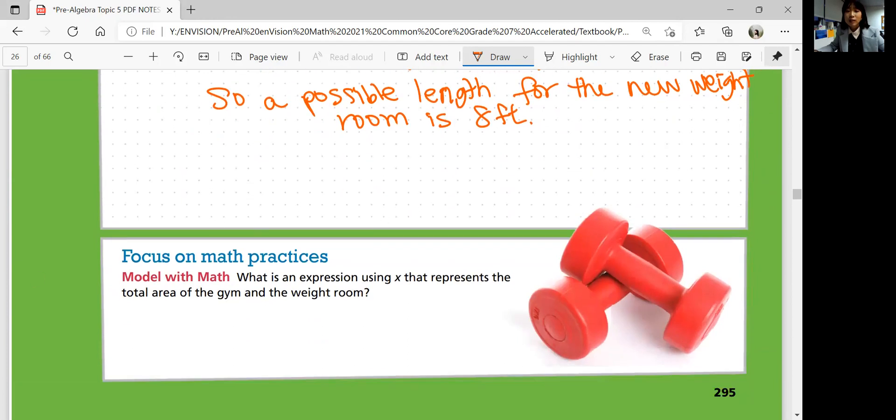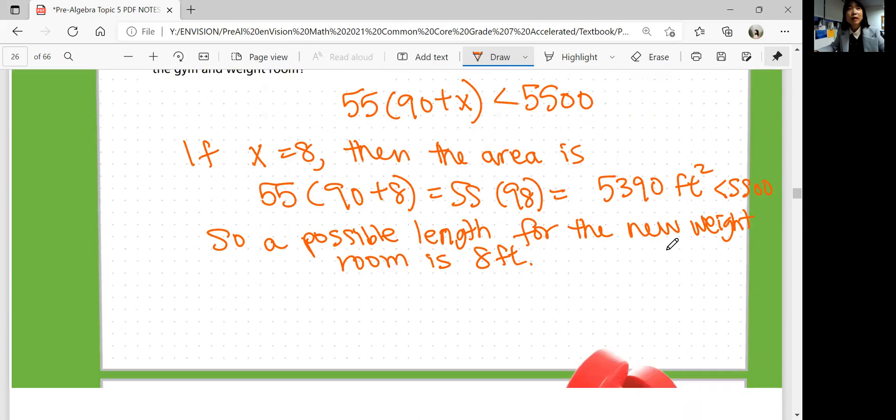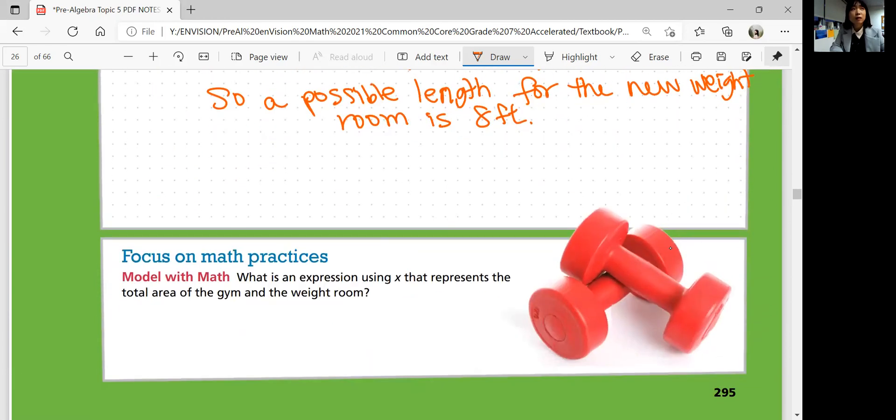Focus on math practices. Write an expression using x that represents the total area of the gym and the weight room. We've already wrote that expression up here: 55 times 90 plus x, right? Because we already know the width. We just need to know the length, 90 plus the length x.